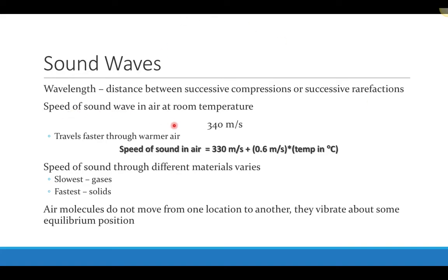The speed of sound can change, but at room temperature, the speed of sound in air is about 340 meters per second. It travels faster in warm air and slower in cooler air. The speed of sound changes by a factor of 0.6 meters per second for every increase of 1 degree Celsius. So I can find the speed of sound in air at any temperature by taking 330 meters per second — the speed at 0°C — and adding 0.6 times the temperature.